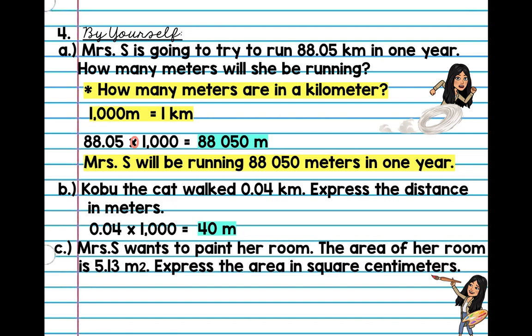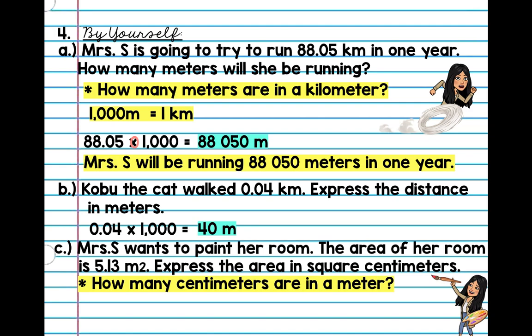Alright, last question. Miss S wants to paint her room. The area of her room is 5.13 meters squared. Express the area in square centimeters. So my question here is: how many centimeters are in a meter? I know that centi is 100, so there are 100 centimeters in a meter. So I'm going to take 5.13 and multiply that by 100. Count my zeros — one, two — so I'm going to move it over twice: one, two. My answer is 513.0 — wait, 512.3 centimeters.